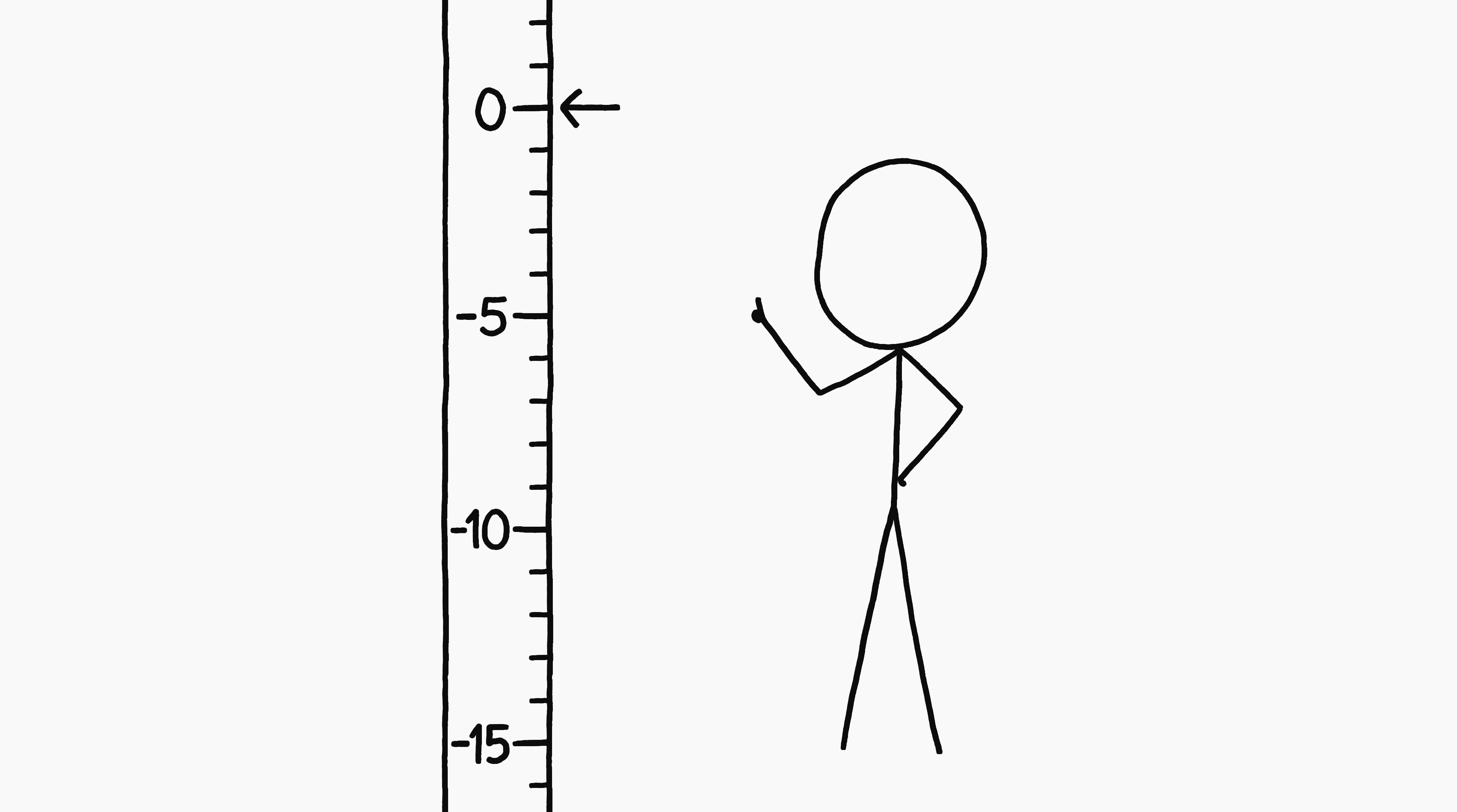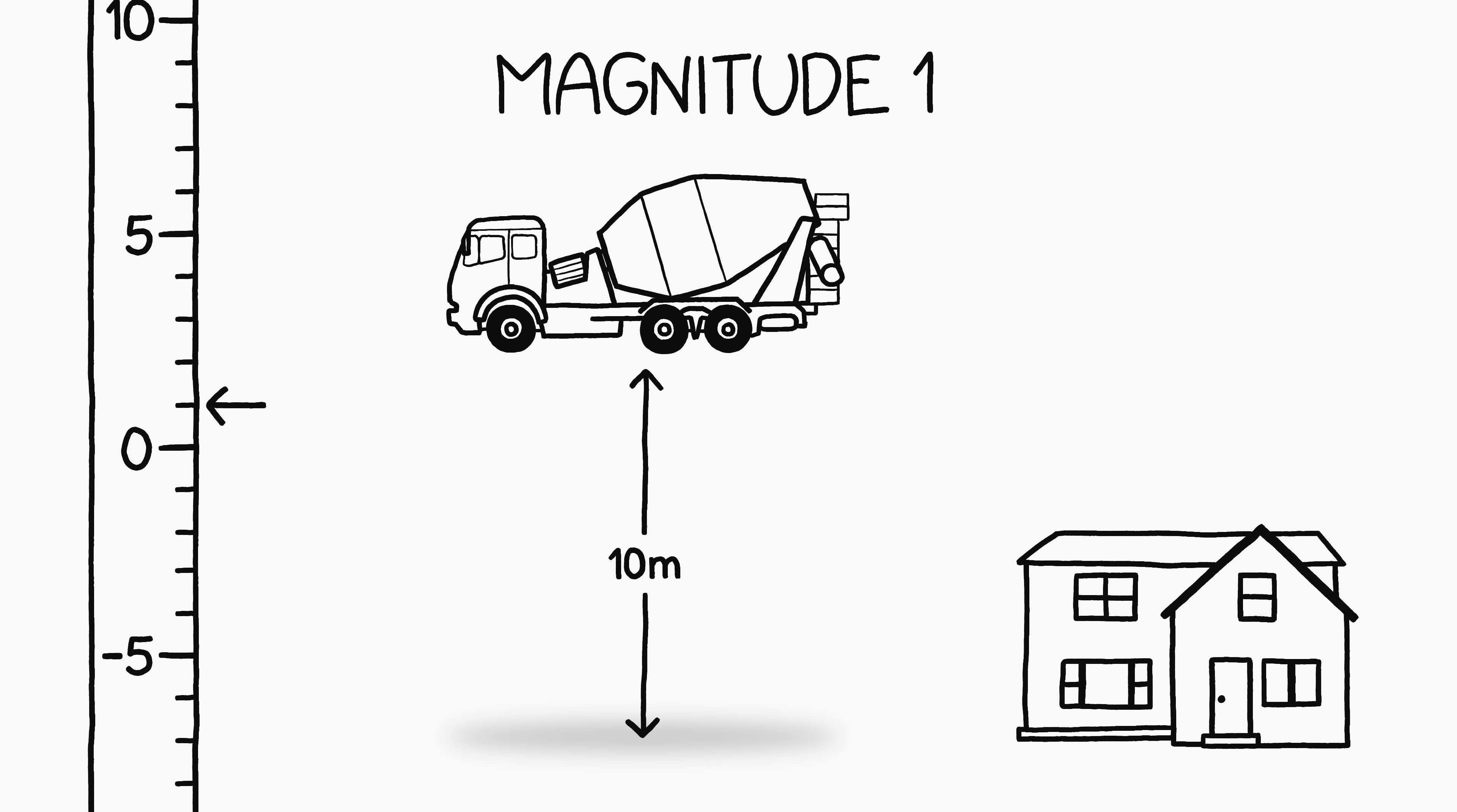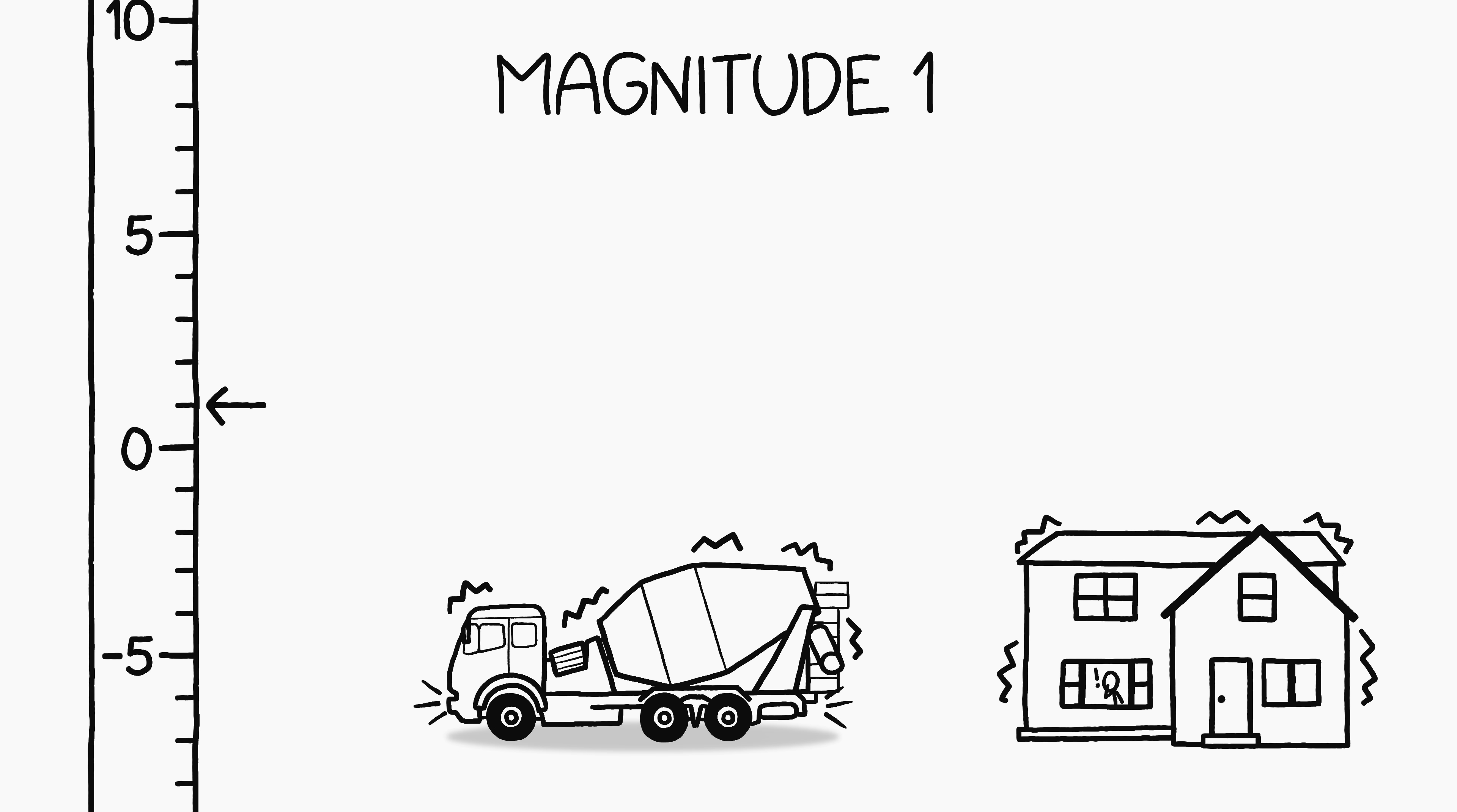Let's take a look at some low-magnitude earthquakes with a description of what they would be like if they hit your house. A magnitude 1 quake releases the same energy as dropping a partially-loaded cement truck from 10 meters onto the street in front of your house.